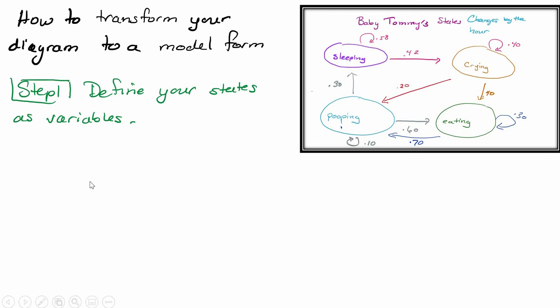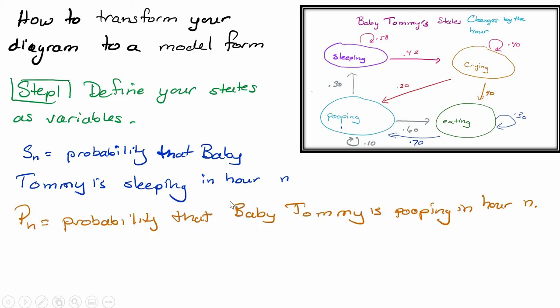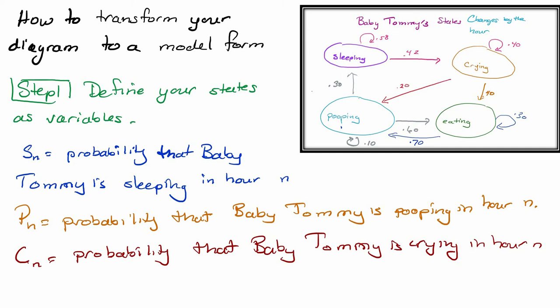The first step is to define my states in terms of variables. n in this case, which we should probably have at the top - I tend to cover my butt by saying in hour n, explicitly stating inside the description that n stands for the hour. So Sn is the probability that baby Tommy is sleeping in hour n. Pn is the probability that baby Tommy is pooping in hour n.